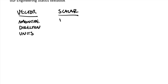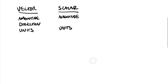Scalars have two of those three things — they have a magnitude and units, but notice that they have no direction. We can express terms as a vector or as a scalar, and really the difference is the directionality of that quantity.